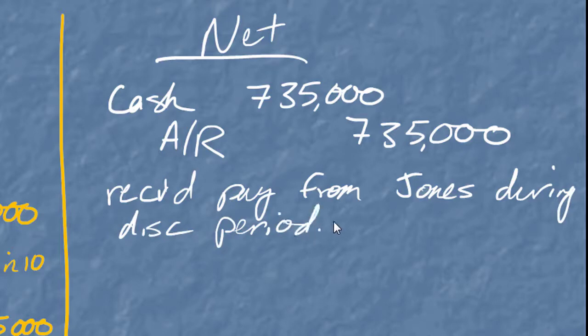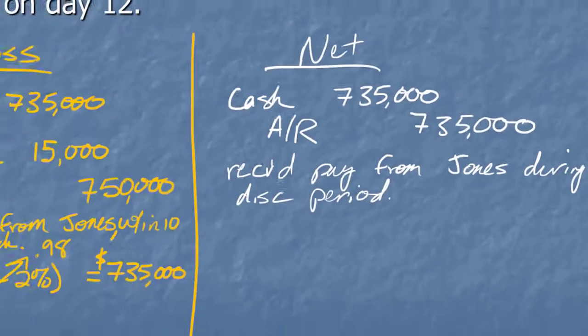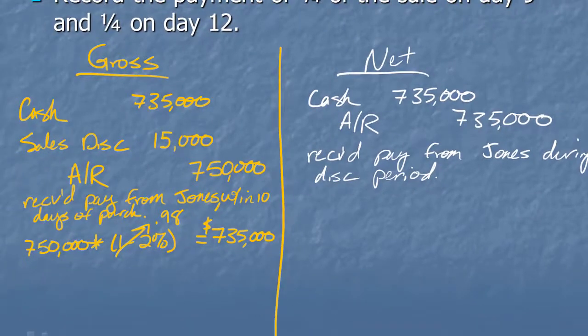And this is received payment from Jones during discount period. It doesn't have to be exact just so long as I don't leave them naked. So that's what this payment looks like when they pay within the 10-day window. Let's take a look at what it looks like if they don't pay within the 10-day window at that last one quarter payment.